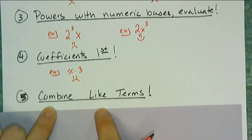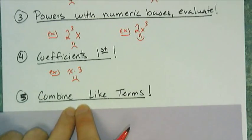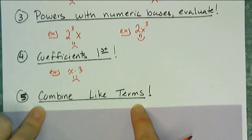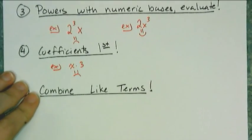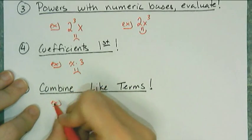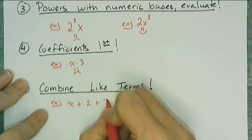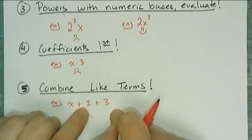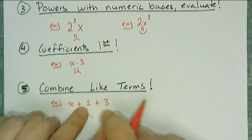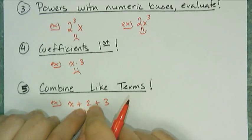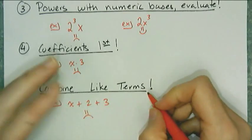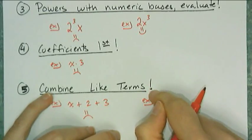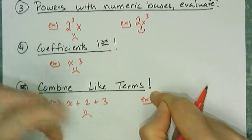This next one is a big one that we'll spend quite a bit of time on: combining like terms. That means things that can be added are added together. So if I have x + 2 + 3, that's a big frowny face, because I know what 2 plus 3 is. By combining the like terms 2 and 3, anything that can be added is combined into a single term.